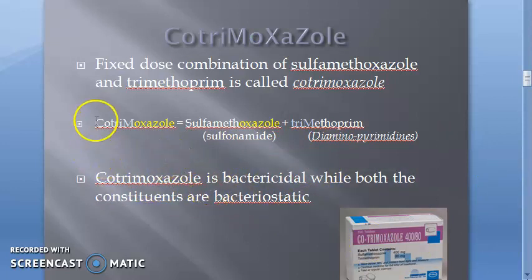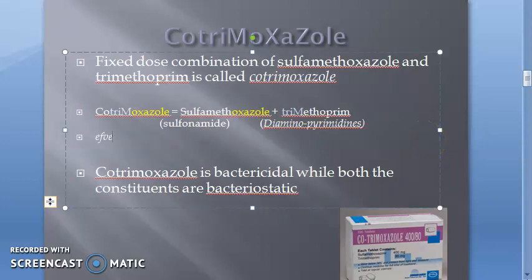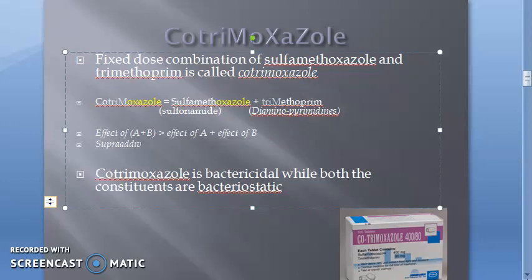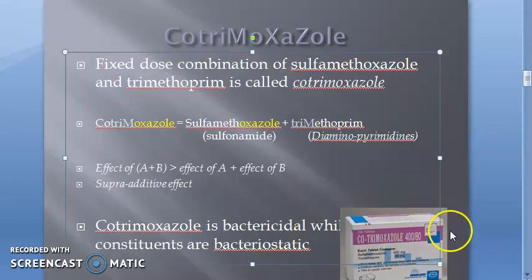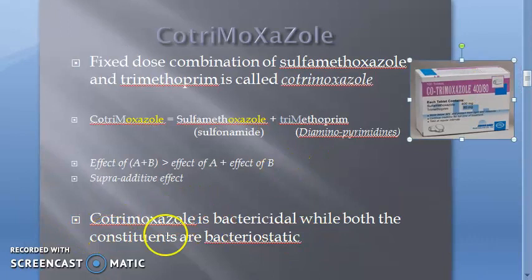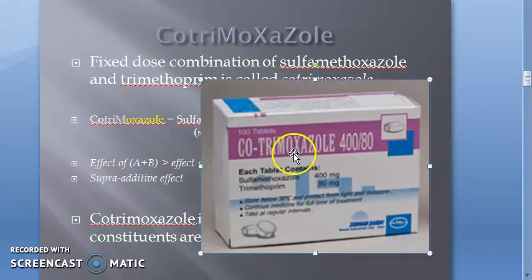To clarify: the effect of A plus B together is greater than the effect of A alone plus the effect of B alone. The individual effects added together are less than the combined effect — this is the supra-additive effect, or synergism. So cotrimoxazole is bactericidal whereas both its constituents are individually bacteriostatic.